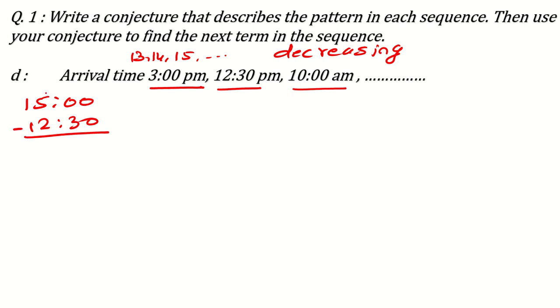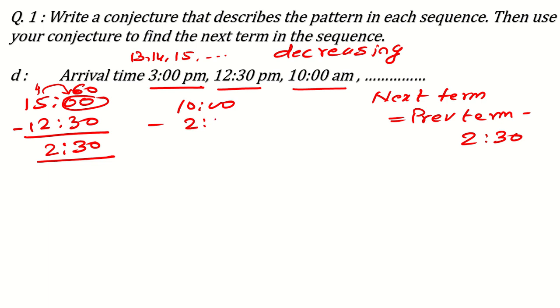Now, here you don't have anything in the minute. So 1 hour will be borrowed from here. And 1 hour means how many minutes? It is 60 minutes. So 60 minus 30, 60 minus 30 will be equal to 30. Now 30 here. And it has given 1. So it will become 14. So 14 minus 12, 2. So what is the difference between 2 times? 2 hour and 30 minutes. This is the conjecture. That the next term is equal to previous term minus 2 hours and 30 minutes. This is the conjecture. So if we follow this conjecture, this pattern, then what will be the next term?